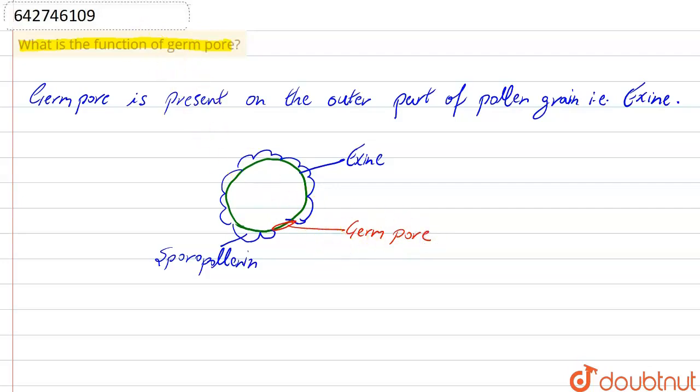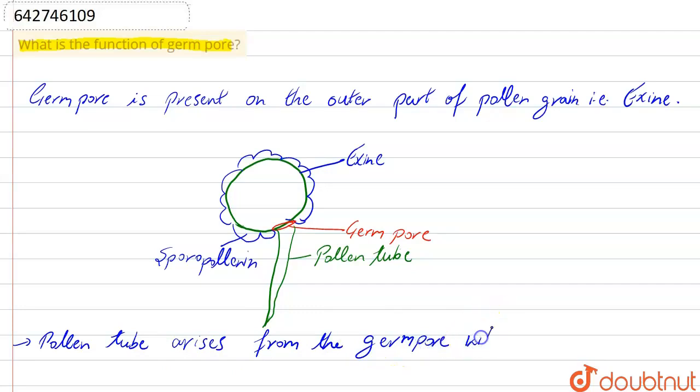Through the germ pore, pollen tube arises. This is what pollen tube. So pollen tube arises from the germ pore where sporopolynin is absent.